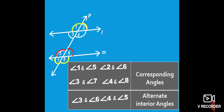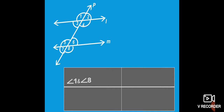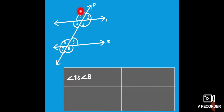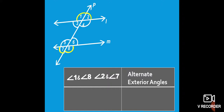Next, angle 1 and angle 8 — these are also in opposite positions. Similarly, angle 2 and angle 7. These are exterior angles and also in alternate positions. So their name is alternate exterior angles. First type: alternate interior angles. Second type: alternate exterior angles.